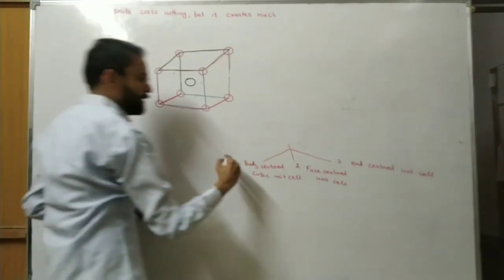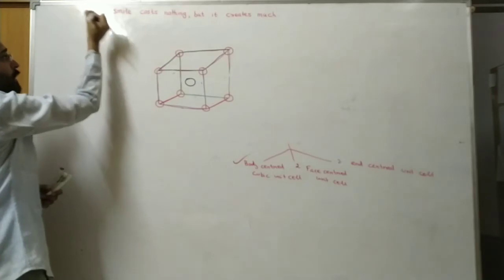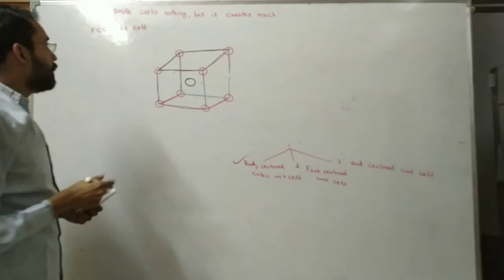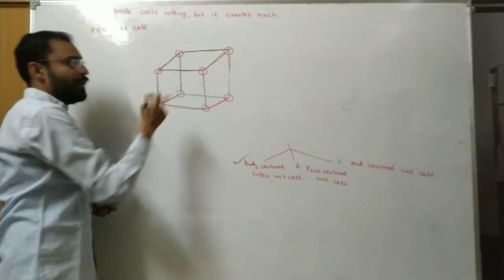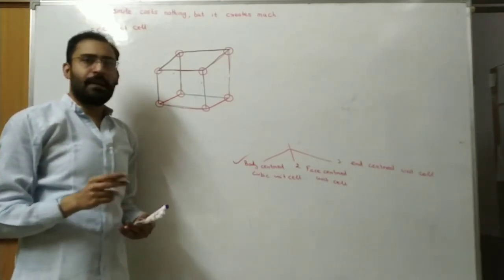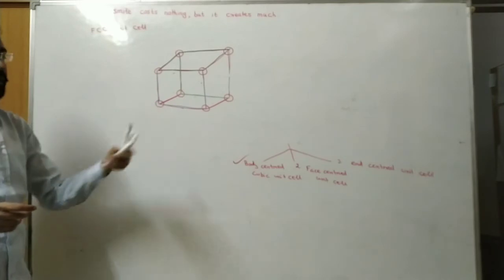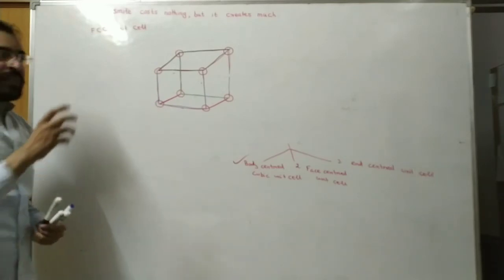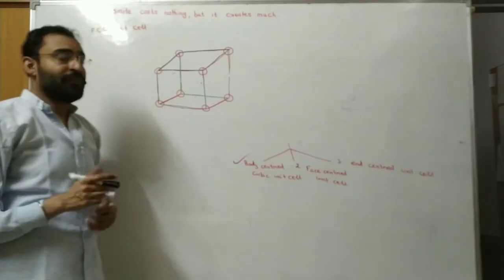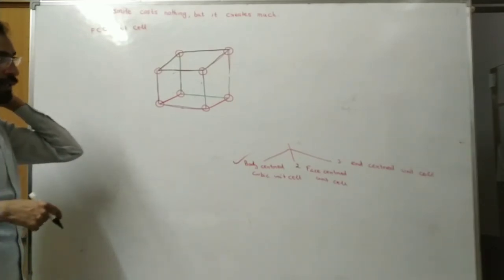Next centered type is the face centered. Face centered unit cell is also known as FCC unit cell. The face centered cubic unit cell is the one in which constituent particles are present at the corner - eight corners of the cube - as well as these also occupy centers of faces. There are 6 faces.